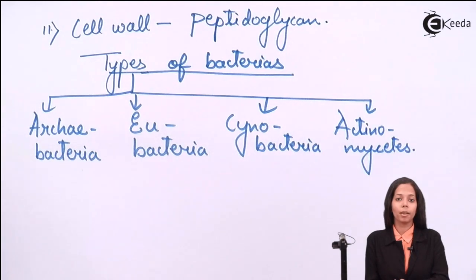Archaebacteria means ancient bacteria. Eu means well organized or true, true bacteria. Cyanobacteria means blue-green bacteria. And Actinomycetes means the bacteria which lives in association with fungi. So you have to learn the examples of each category.